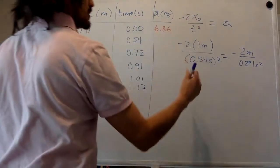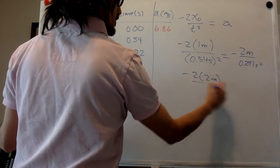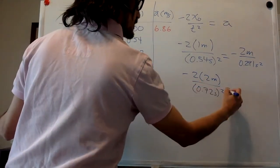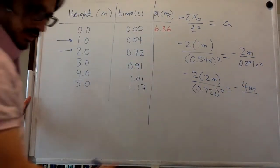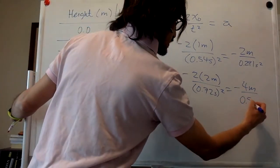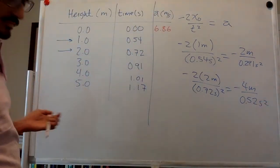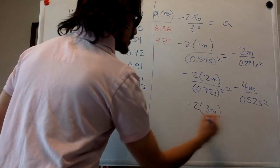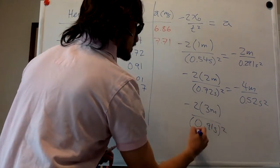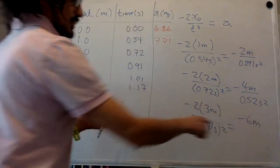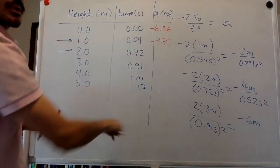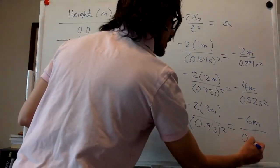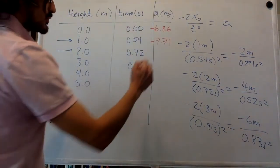And so on here, and you can just repeat this. So negative two times two meters divided by 0.72 seconds squared. Negative four meters divided by 0.52 second squared. And that is going to be equal to 7.71 and so on. So negative two times three meters, 0.91 seconds squared. So that's negative six. And by the way, we have the negative in here in all cases, because the acceleration is pointing down. So this one is 0.83 seconds squared. And this one is 7.24 negative.